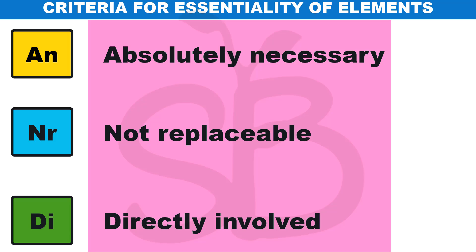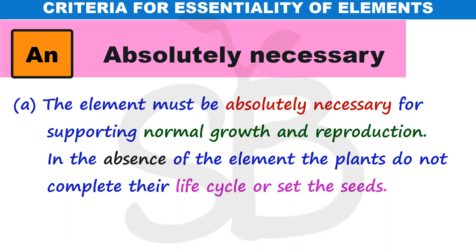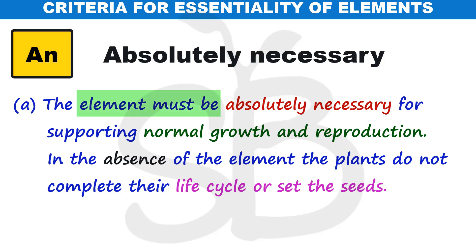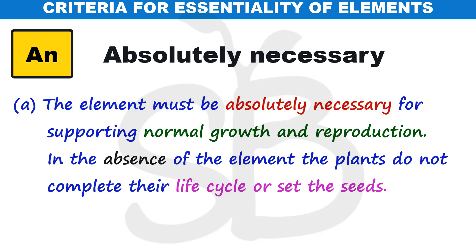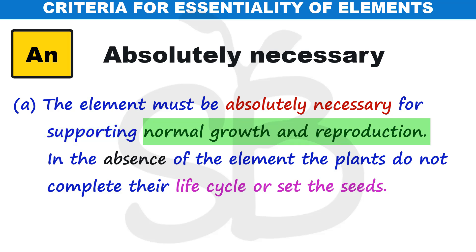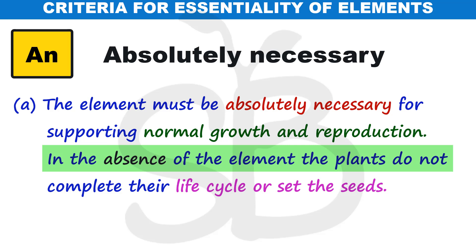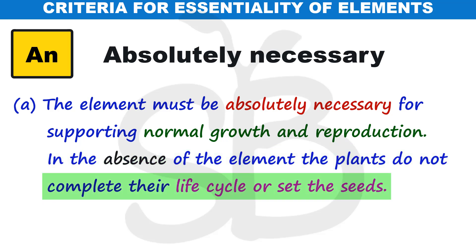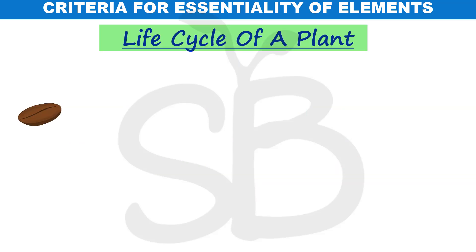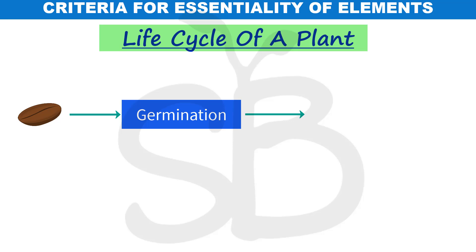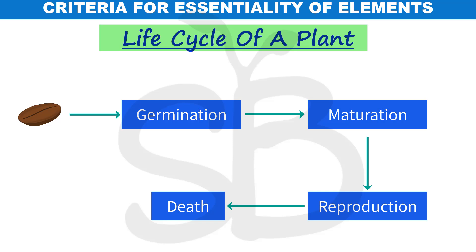The first criterion is 'absolutely necessary.' The element must be absolutely necessary for supporting normal growth and reproduction. That is, in the absence of the element, the plant cannot complete its life cycle or set seed. The seed must germinate, offspring must be produced, and the life cycle must be completed.